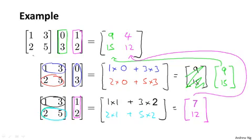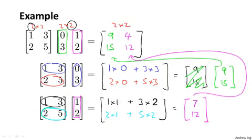You may also notice that the result of multiplying a 2 by 2 matrix with another 2 by 2 matrix gives a resulting dimension of 2 by 2 — the result is itself a 2 by 2 matrix.